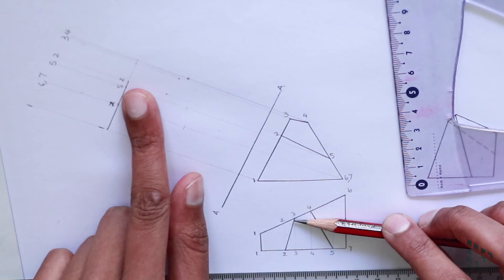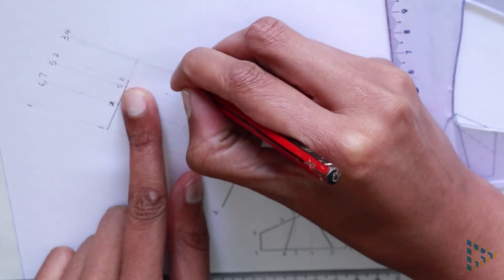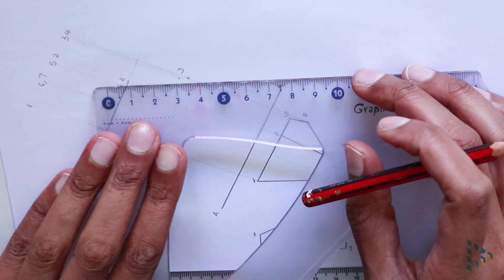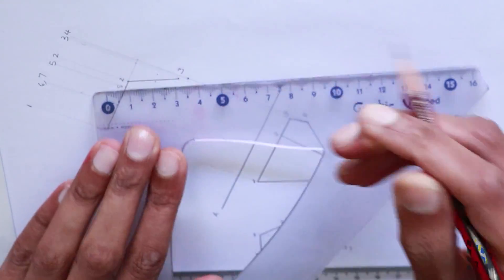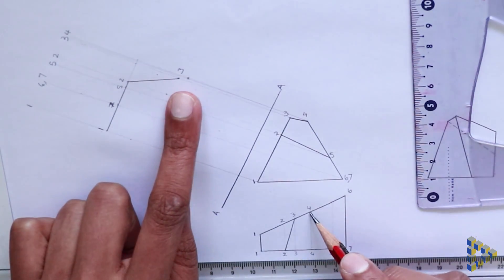2 is joined to 3 and therefore we can draw a straight line from 2 to 3 on the auxiliary drawing. Similarly, 3 and 4 are joined so we draw a straight line from 3 to 4.